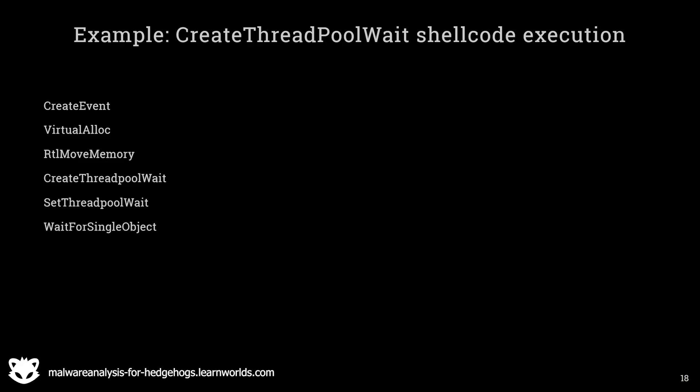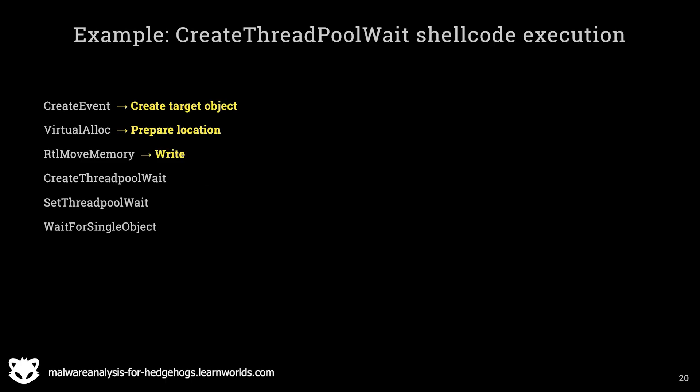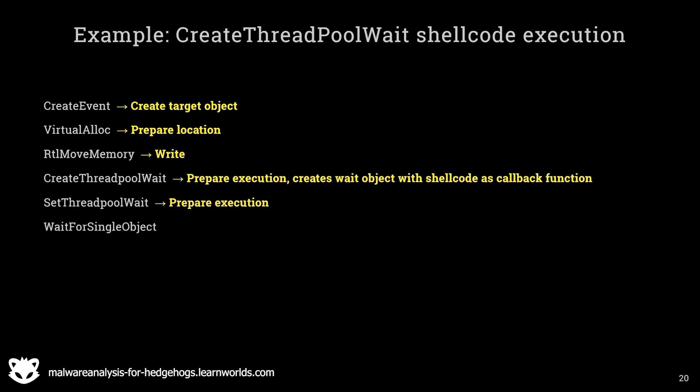Let's take a look at another example: CreateThreadpoolWait shellcode execution, which is an own-process execution of shellcode. I would set the end breakpoint at WaitForSingleObject. Identifying the steps: CreateEvent creates a target object, VirtualAlloc prepares the target location, RtlMoveMemory writes the data to the allocated buffer, and CreateThreadpoolWait plus SetThreadpoolWait prepare the execution. CreateThreadpoolWait connects a wait object to the shellcode, which is used as a callback function executed once the wait is over. SetThreadpoolWait links the event to the wait object. Finally, WaitForSingleObject causes the callback function to execute.